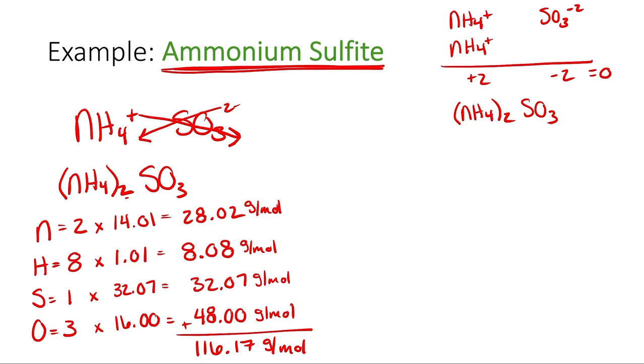Now this is the part where we're determining the percent composition. If I wanted to know what percentage of this compound is nitrogen, I would take the total mass from all the nitrogen atoms, 28.02, and divide that by the total molar mass, 116.17, multiplied by 100. Likewise, I'm going to do the same thing for hydrogen, take the total mass from all the hydrogens, 8.08, divide it by the total molar mass of the compound, and multiply it by 100.